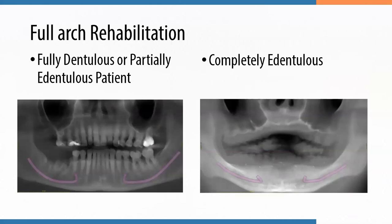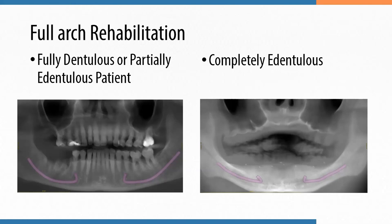Now we're going to talk about full arch rehabilitation and the types of surgical procedures and treatment plans we can offer patients. That depends on many things. As mentioned, the patient is either going to come in with teeth or be completely edentulous. For completely edentulous patients, the chief complaint is usually that the denture keeps rocking and they want something more fixed — which also needs to be taken into account when selecting the treatment plan.